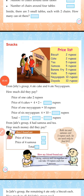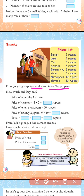From Jobi's group, four ate cake and six ate naiappam. How much did they pay? Price of four cakes. One cake is two rupees, so four twos are eight. Write here eight rupees.